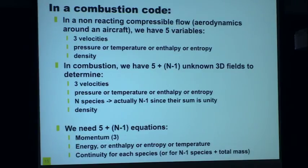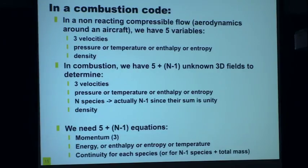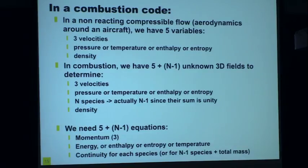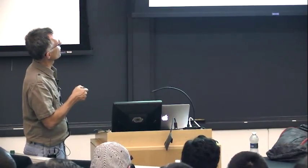In combustion, instead of the five flow variables, we need to add all the species — ending up with 5 plus n minus 1 equations, since the sum of all mass fractions equals unity. And n can be large. If you have a 3D code with 5 equations and a chemist says you need 1000 more species, you go from 5 to 1005 — that's not a small modification. We need the conservation equation for species k as derived this morning by Paul, with the diffusion velocity.